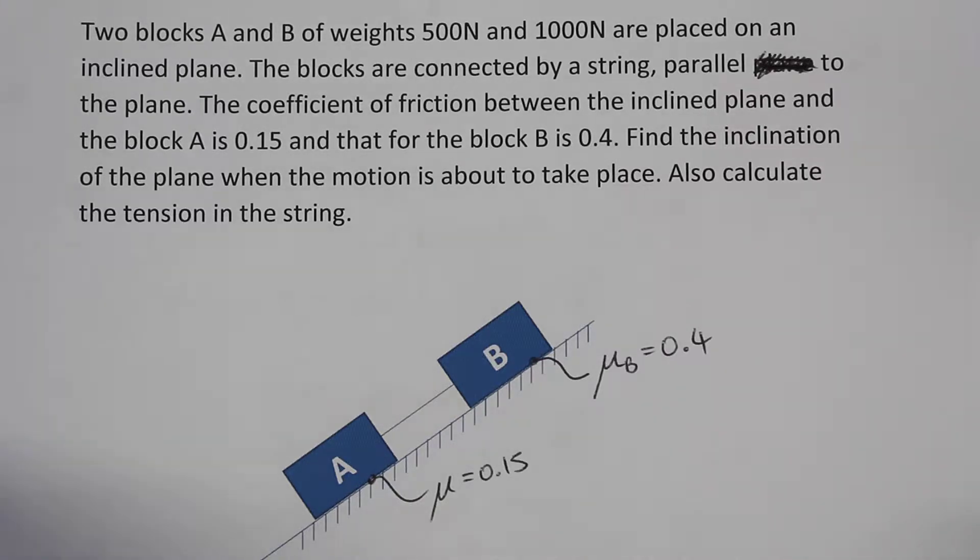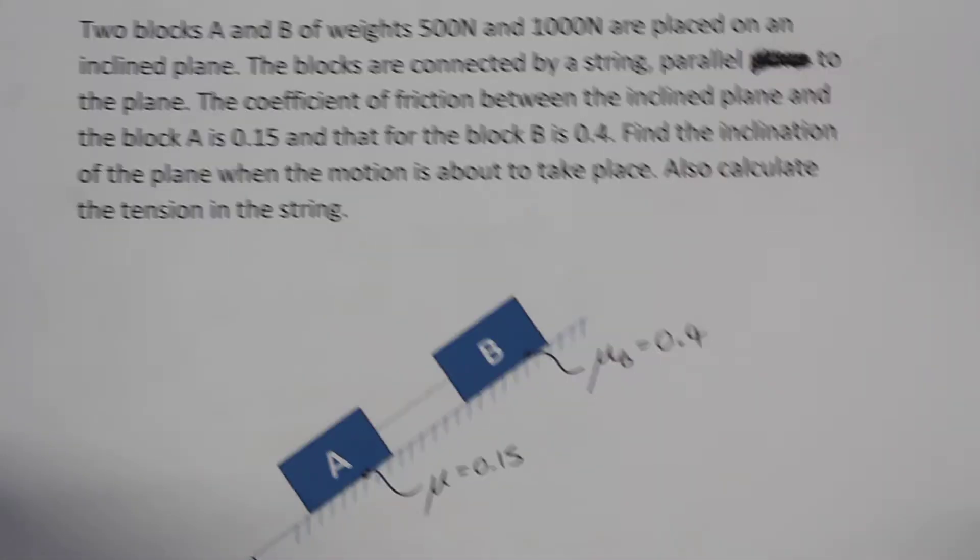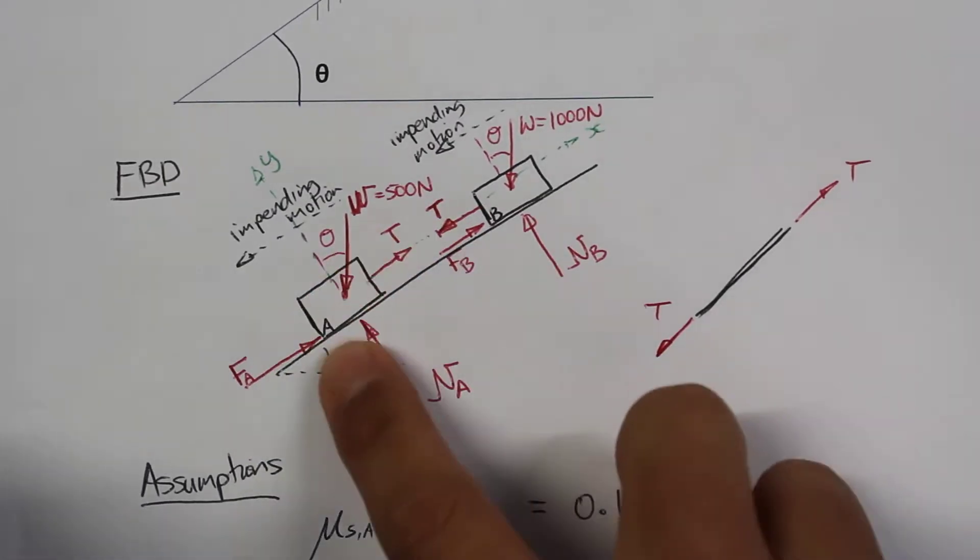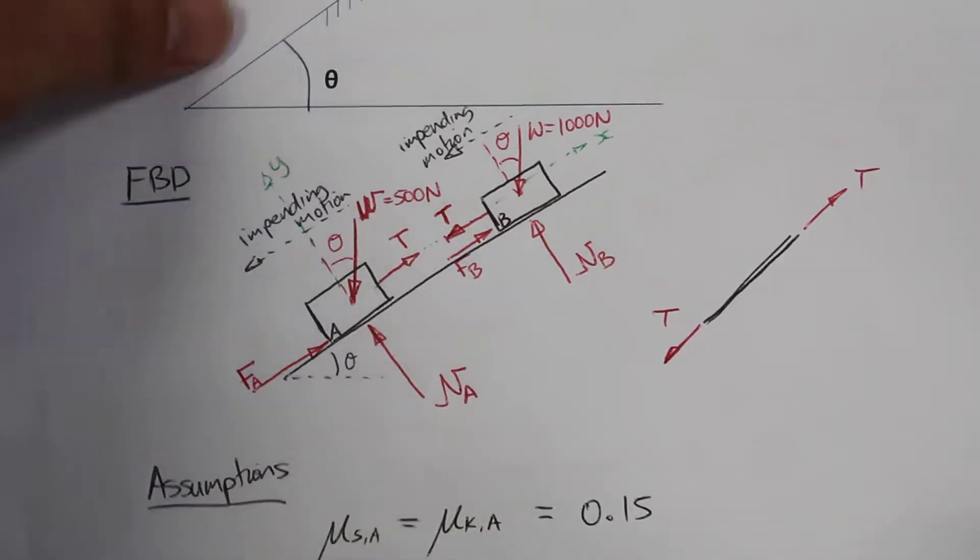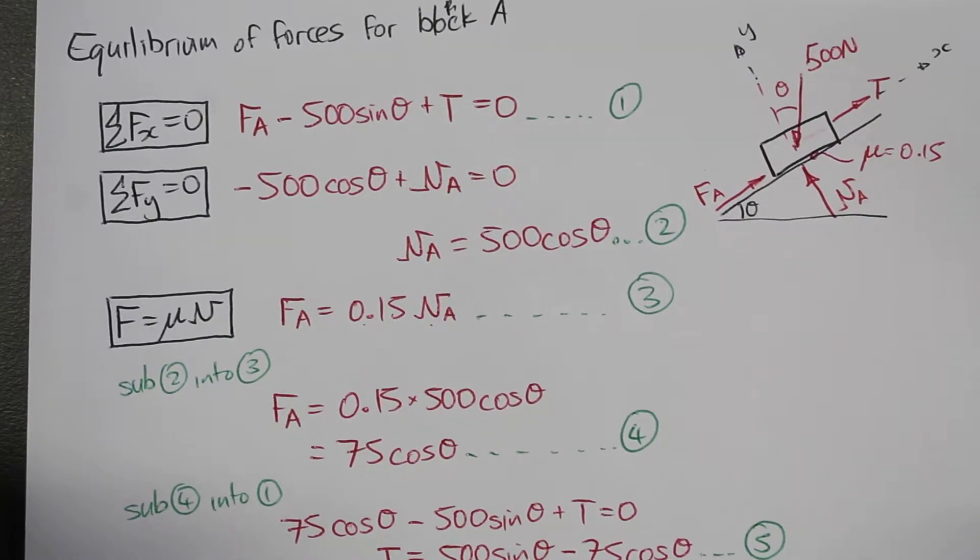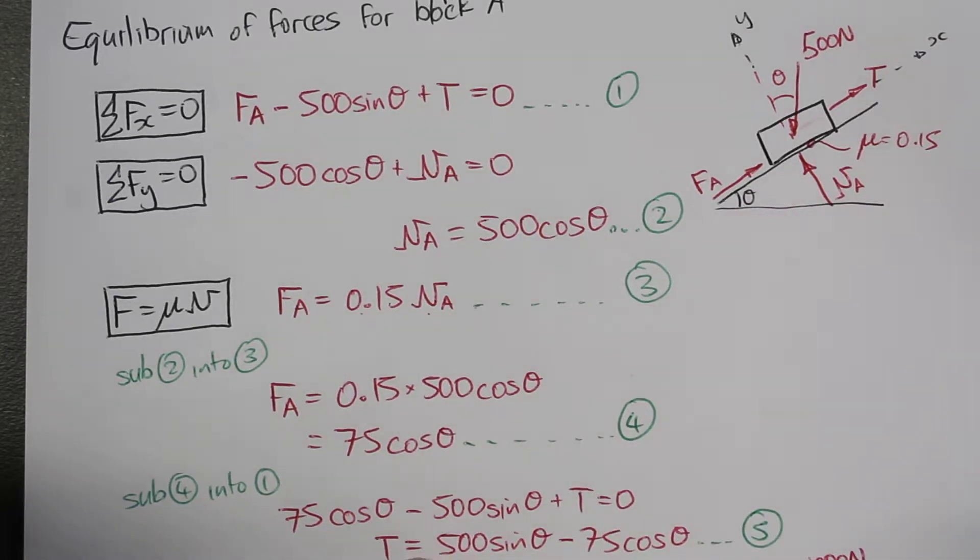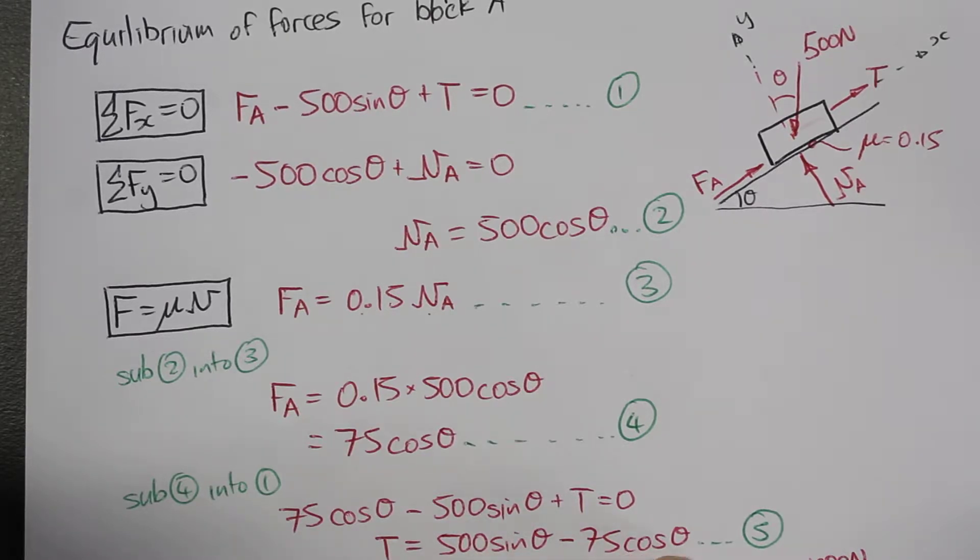Hi guys, in this video I'll continue solving the following question here. So far we've taken this system, we've drawn a free body diagram of the overall system, two free body diagrams, one for block A and one for block B. We've also created the equilibrium of forces for block A, and from this equilibrium of forces we've gotten this equation here. So T equals 500 sine theta minus 75 times cosine theta here.